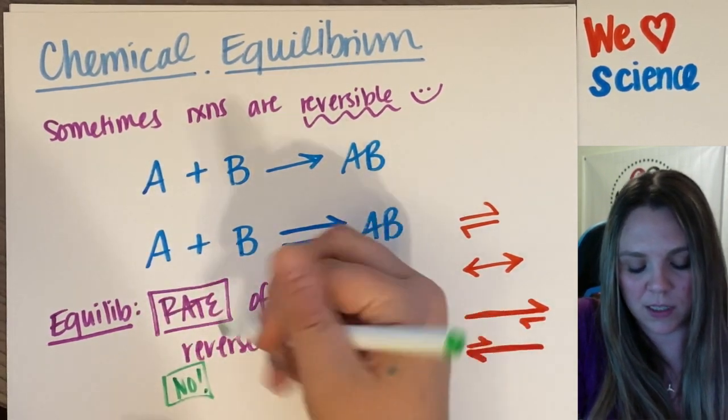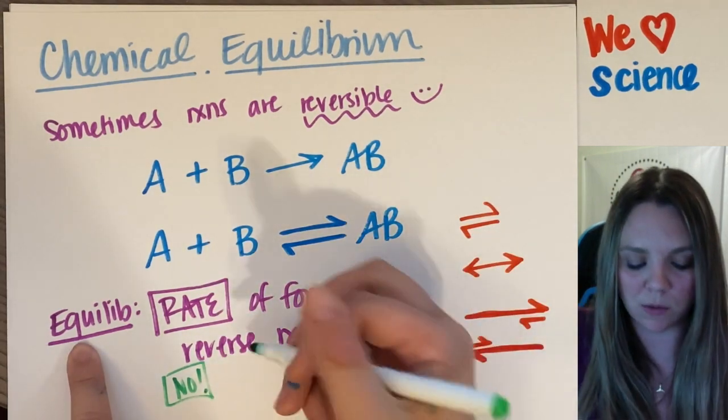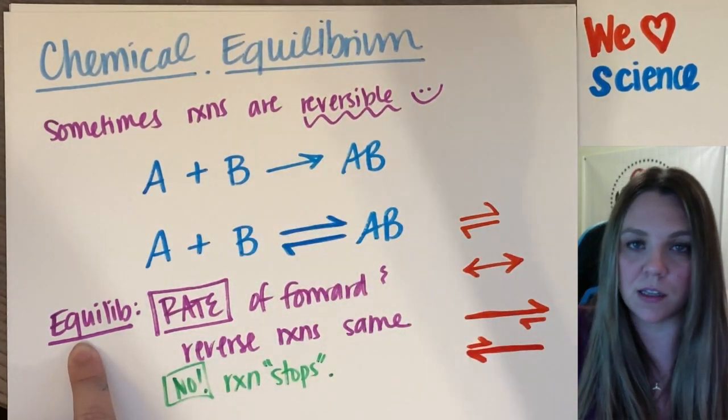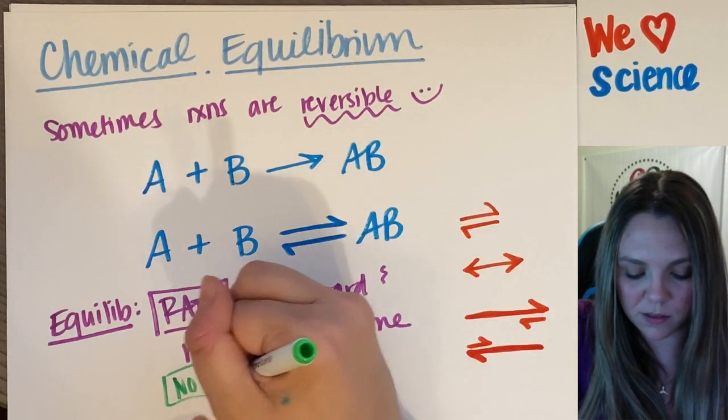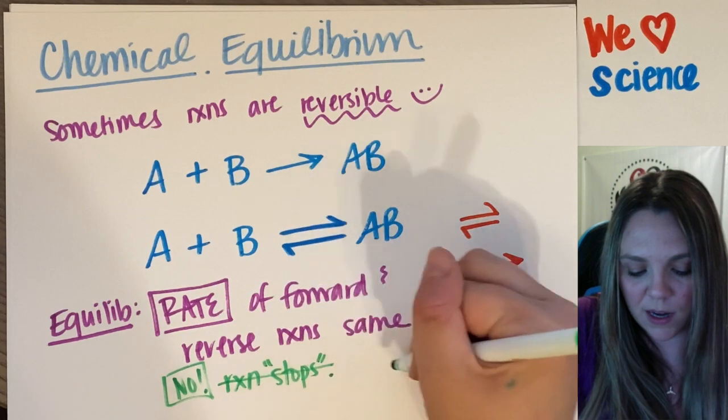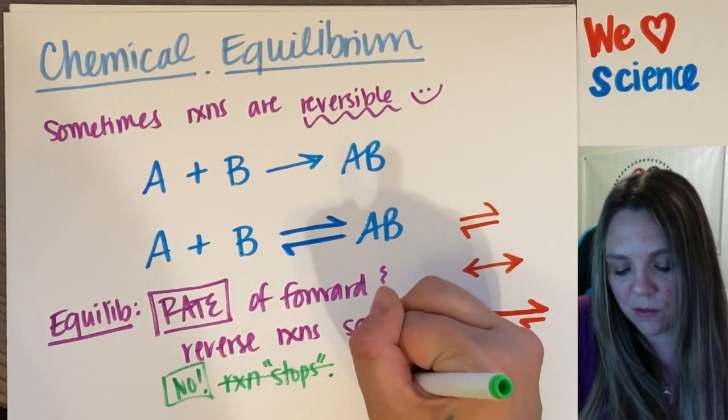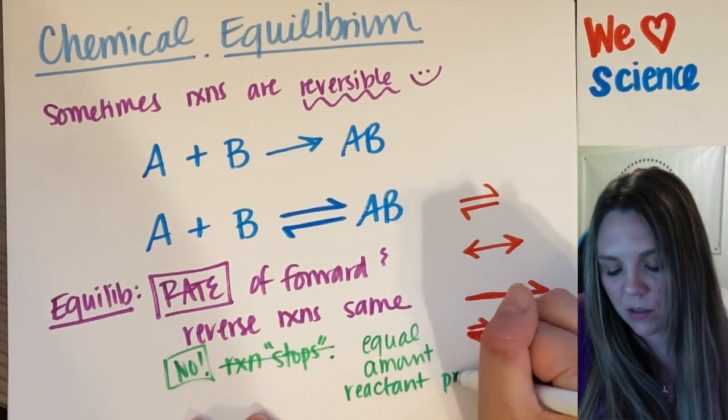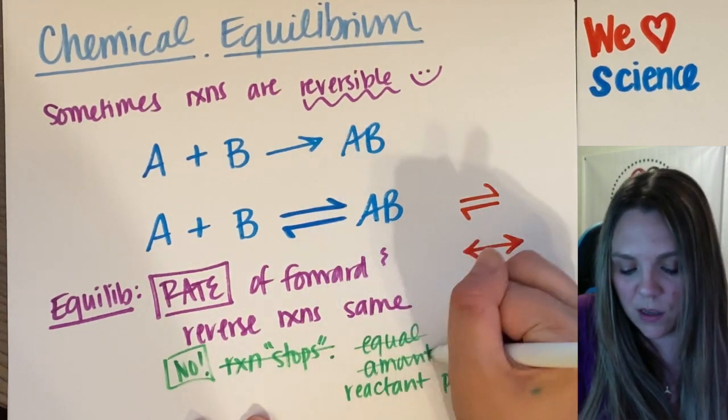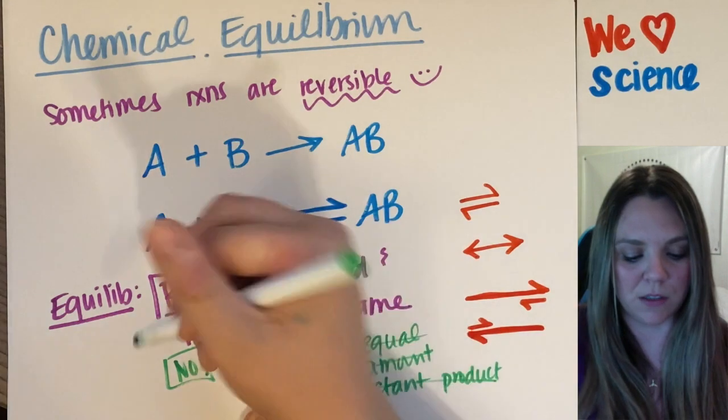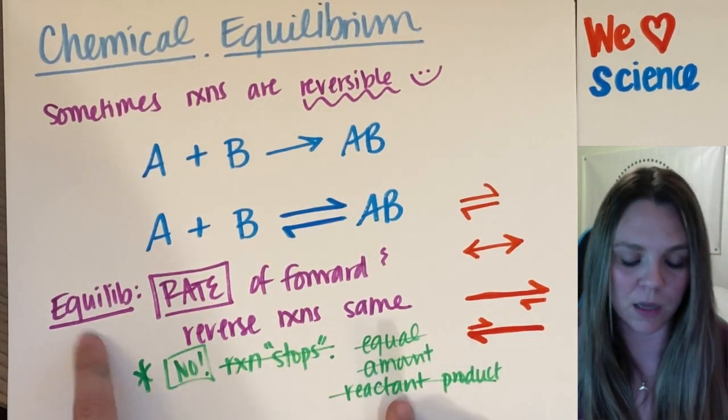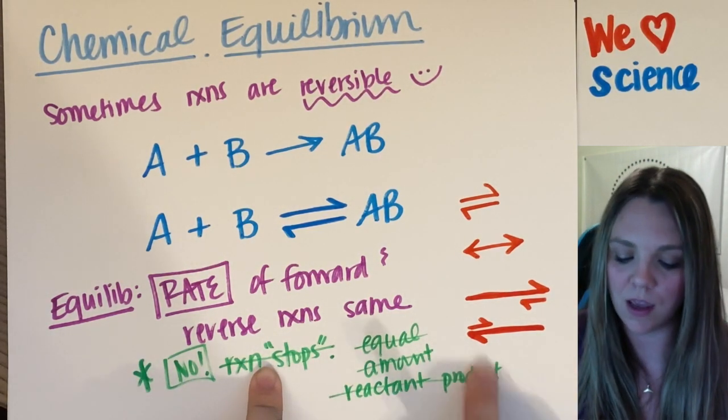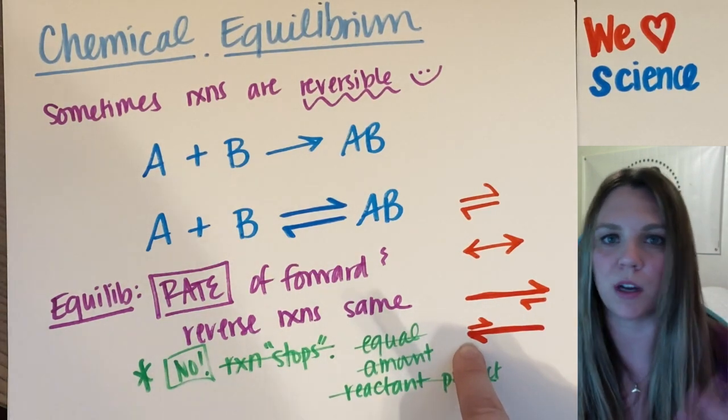No. It does not mean that I reach equilibrium when the reaction stops because the reaction doesn't stop. It continues to go. It does not mean the reaction stops. It does not mean that I have equal amount of reactant and product. These are the two biggest things that are missed, the two biggest mistakes. So, don't you make them. Equilibrium is when the rate of the forward and reverse reactions are the same. Not when a reaction stops because it doesn't. And not when I have an even amount of concentration of product or reactant.